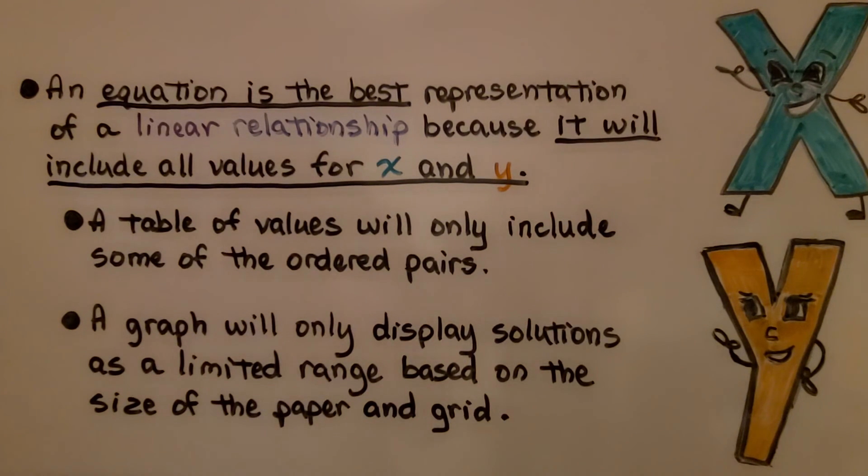An equation is the best representation of a linear relationship because it will include all values for x and y, infinite values. A table of values will only include some of the ordered pairs. And a graph will only display solutions as a limited range based on the size of the paper and the grid. This equation will include all the values for x and y. So it's the best representation of a linear relationship.